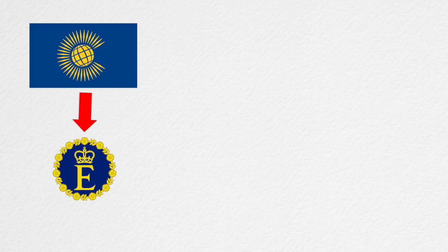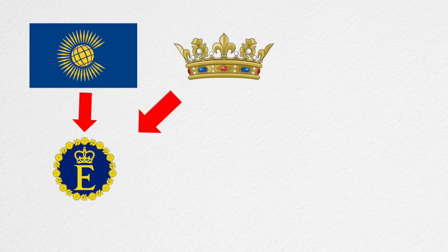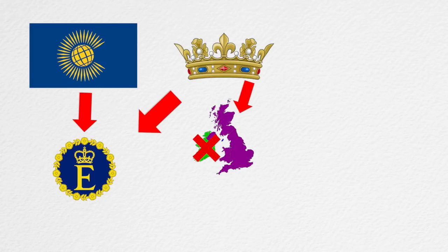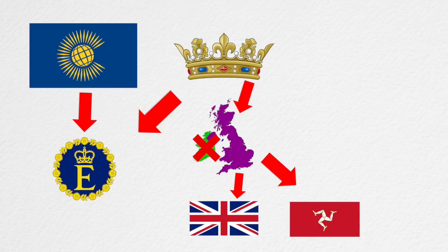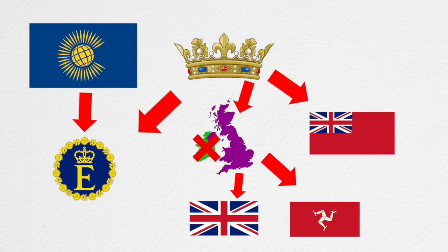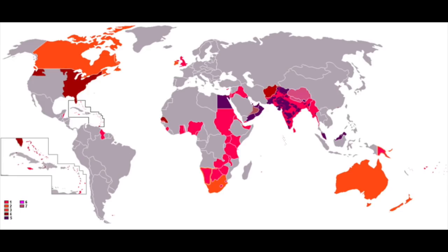So in summary, we have the Commonwealth of Nations, including the Commonwealth realm, which is a part of the crown, which includes the British Isles — except the Republic of Ireland — most of which is a part of the United Kingdom, except the crown dependencies, and also the British overseas territories. These types of classifications were how the British organized their entire empire, but that is a story for another video.